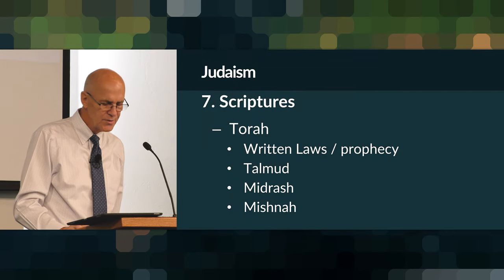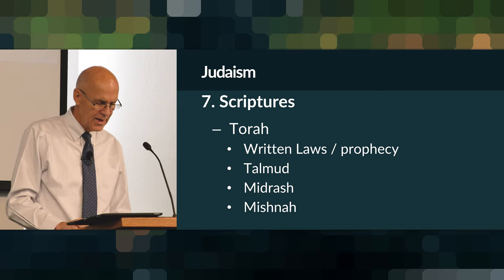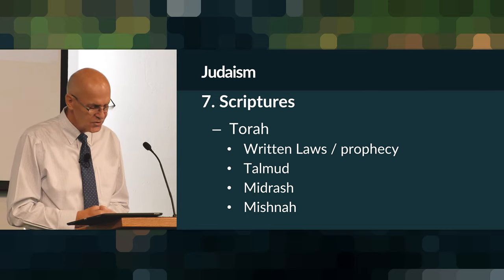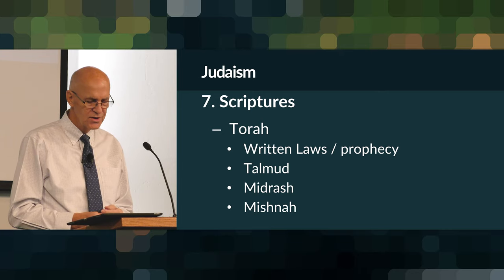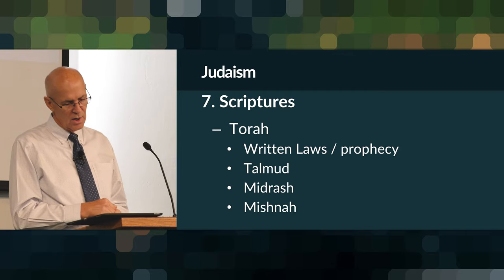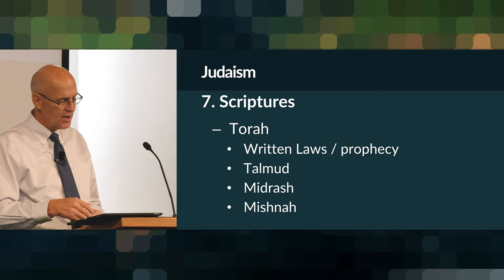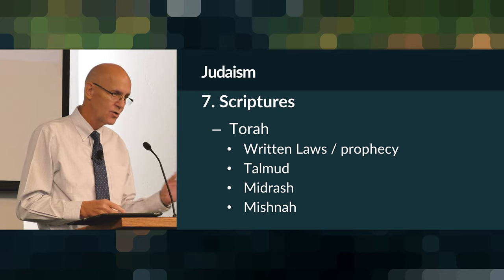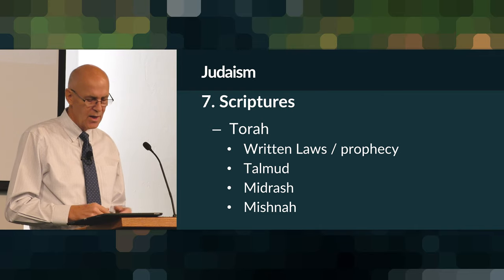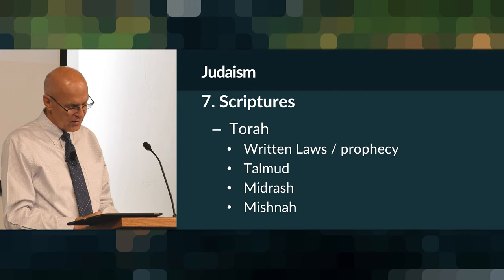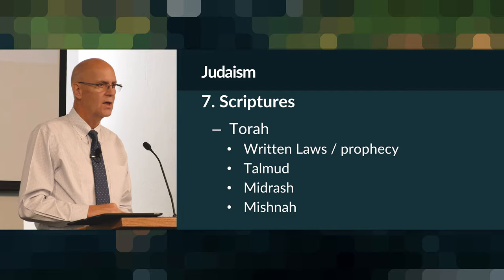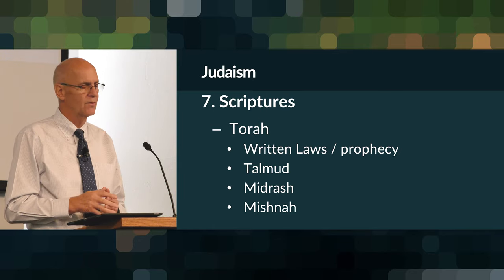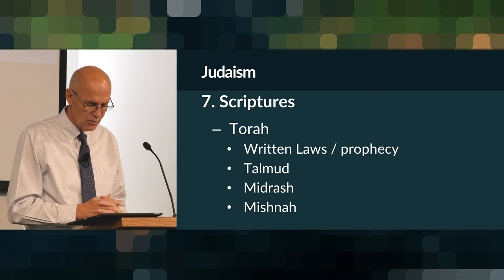There are scriptures, of course. The Torah — which means 'to teach' — is the Hebrew Bible. It contains written laws and revelation, which is what we call the Old Testament. It also has oral teachings, traditions, and commentaries by various rabbis and teachers — different books such as the Talmud, the Midrash, and the Mishnah. The Jews don't consider their writings as the Old Testament, and of course they reject the New Testament as having no authority whatsoever. When speaking to a Jewish person about their scriptures, you refer to it as the Hebrew Bible, or the Tanakh.